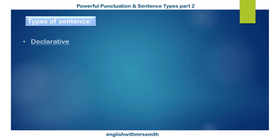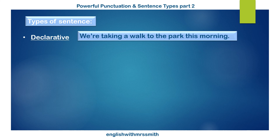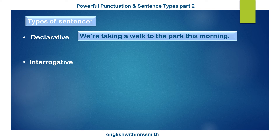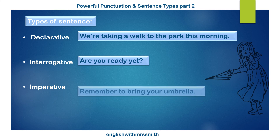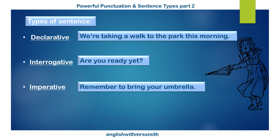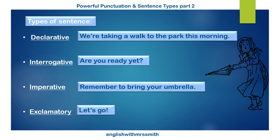Remember the technical term for these different sentence types. Declarative — make a statement, close with a full stop. Interrogative — ask a question, but please remember to close with a question mark. Imperative — give a command. The imperative really comes into its own when writing to persuade or to advise. If it ends with an exclamation mark, it's exclamatory.